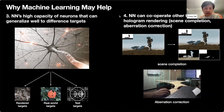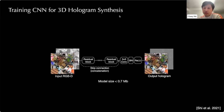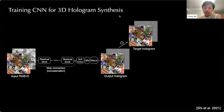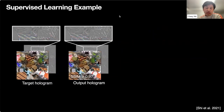Fourth, CNNs are powerful enough to cooperate with multiple tasks alongside the main task; specifically, scene completion and aberration correction are relevant to hologram rendering. Given these arguments, let's look at how supervised learning can help. Last year, we introduced the first large-scale 3D hologram dataset with 4,000 RGBD images and paired holograms, designed to be complex, depth-uniform, and fully defined at every pixel. Using this dataset, we trained a memory-compact residual network to directly map from an RGBD image to a 3D hologram. Notably, this network occupies less than 0.7 megabytes, so it can be stored and run on mobile devices.